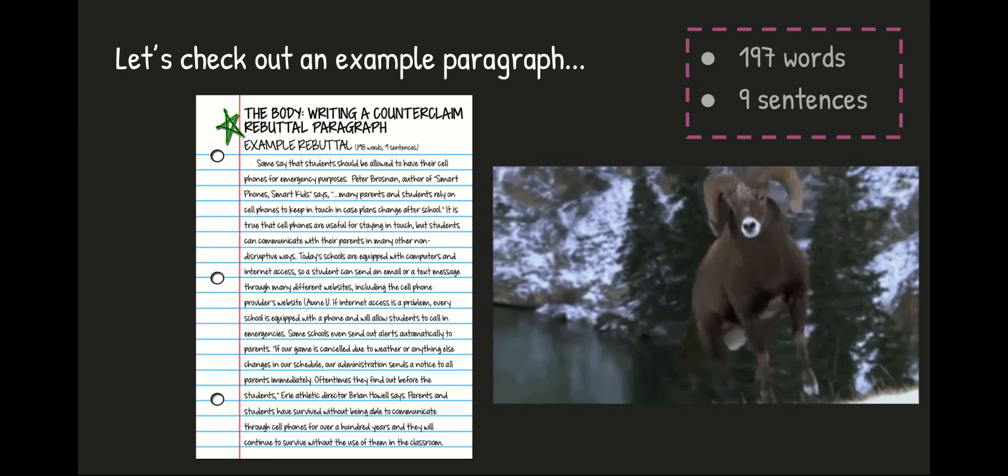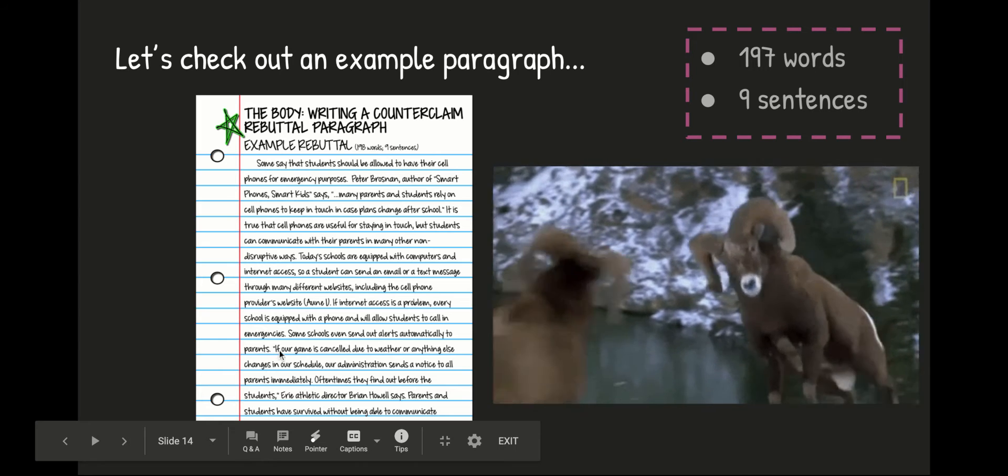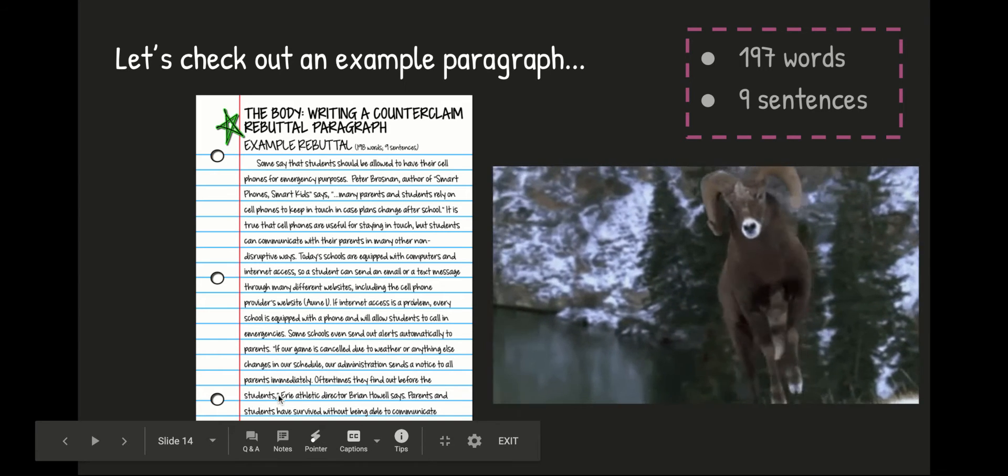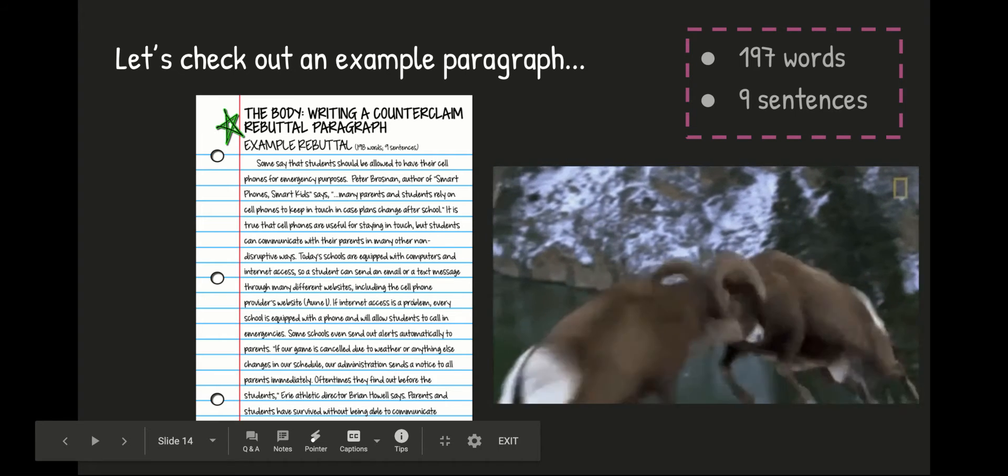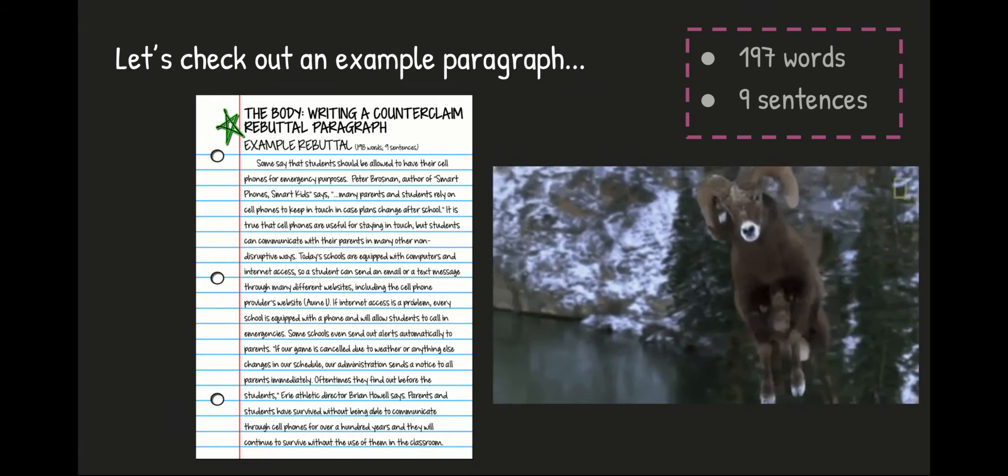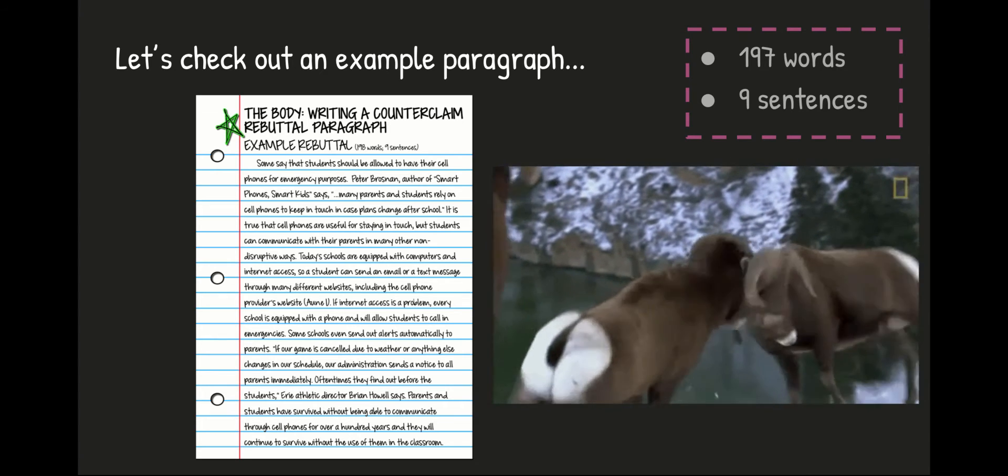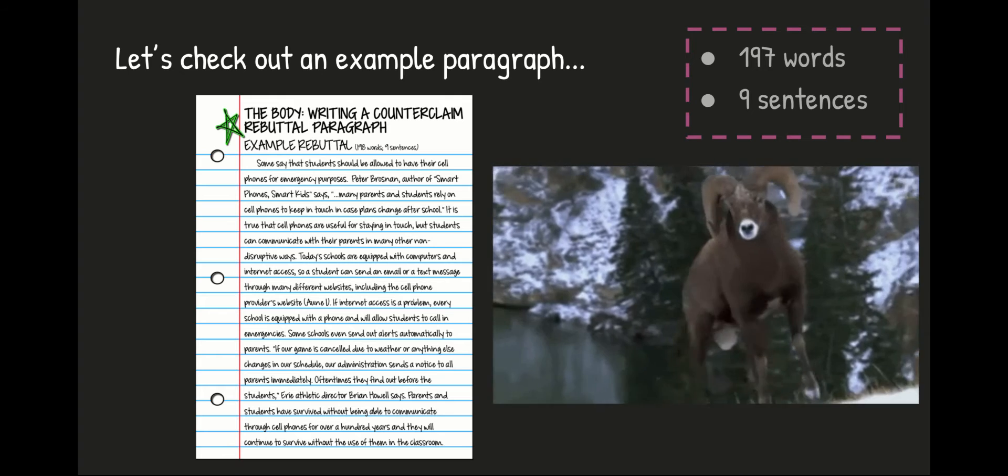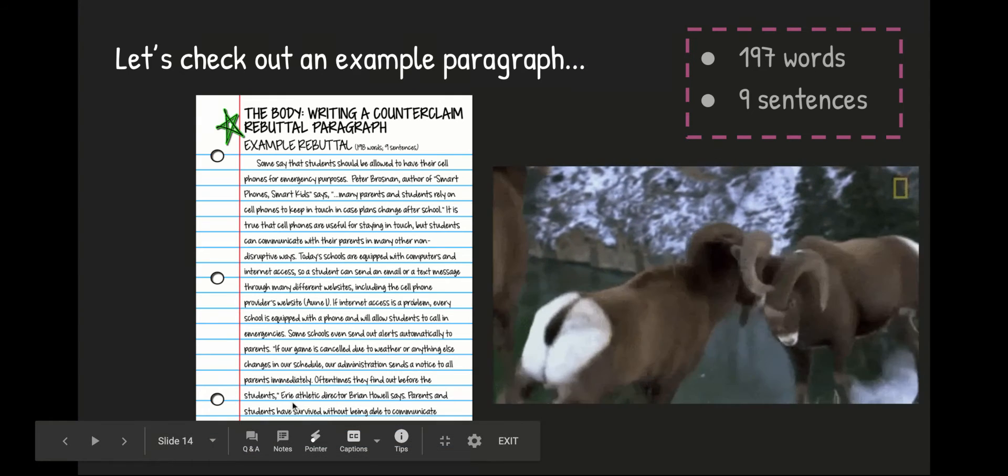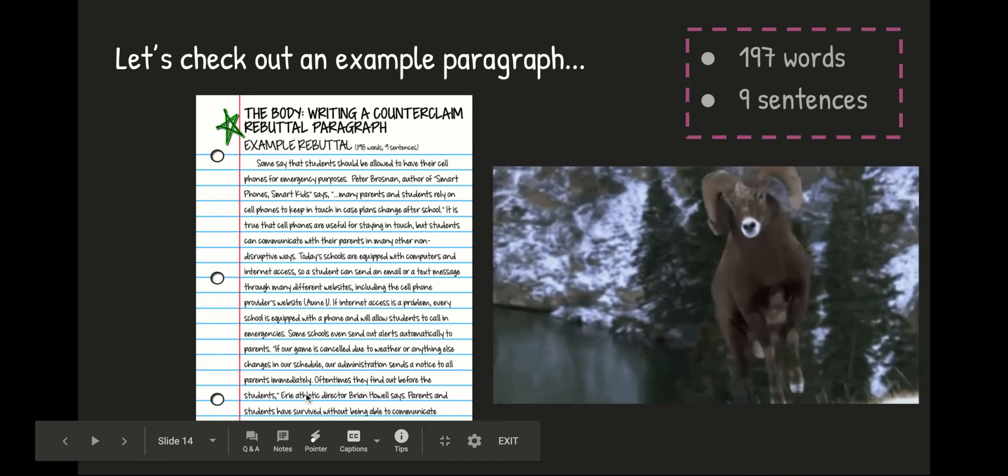The next line is a direct citation. You have quotes around it. It starts with if and it ends with students. If our game is canceled due to weather or anything else changes in our schedule, our administration sends a notice to all parents immediately. Oftentimes, they find out before the students, Erie Athletic Director Brian Howell says. We know that he is a reliable source because he is an athletic director at the Erie School.